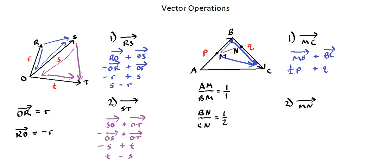A vector from M to N, which starting at M will go to B, and then from B go to N. So we will add vector MB with vector BN. And in terms of small letter P and small letter Q, we saw in example one MB is one half P, adding BN, which is a portion of BC. Now how much of BC?